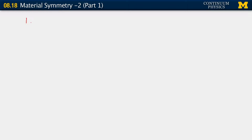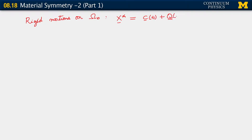Let's continue with our development of these questions of material symmetry and material isotropy. We have been considering rigid motions on omega naught, and these motions are of a type that carry the reference configuration to a new reference configuration. C belongs to R3.